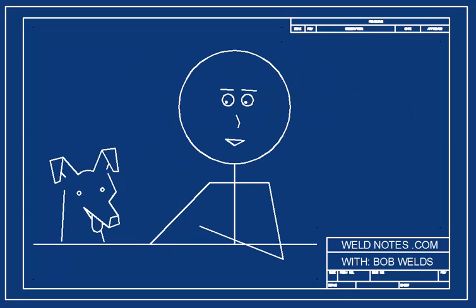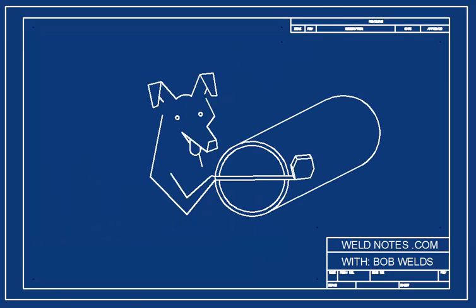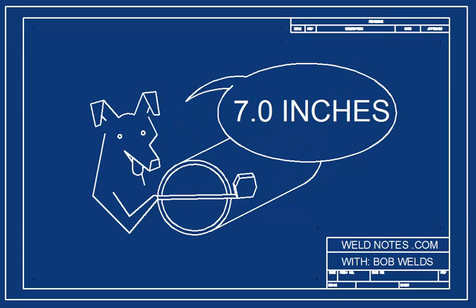Now, let's compare that to the diameter of the pipe. Sparky will now measure the diameter of the pipe. The diameter of this pipe is right at 7.0 inches.